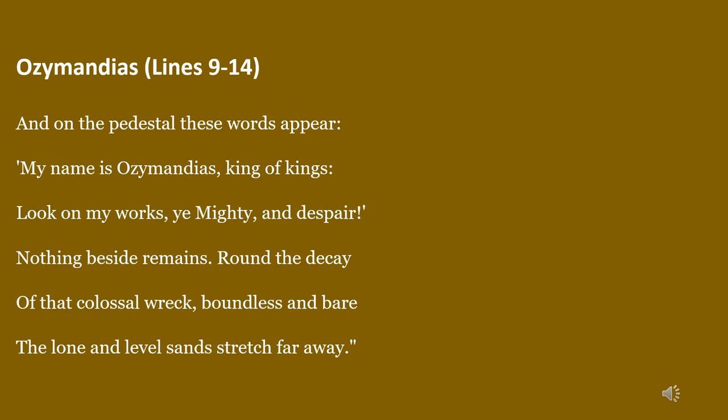King Ozymandias is giving the message that the onlooker — the person standing in front of the statue — should look at the statue and think about the great deeds, the big achievements and victories of King Ozymandias, since he was a brave warrior. That person should give up all hopes of equalling King Ozymandias, who considered himself the greatest and most powerful in the world.